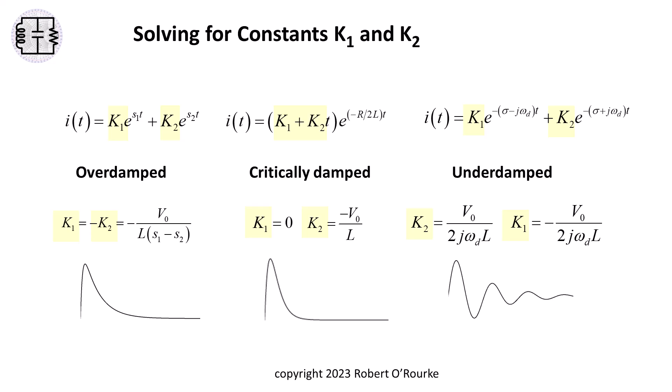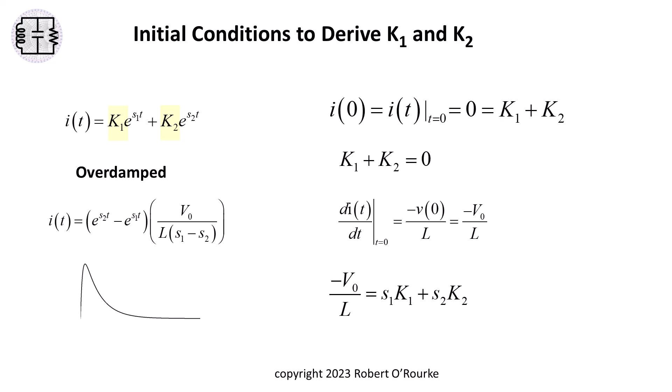The final step in the RLC differential equation solution process is to solve for the values of the constants k1 and k2 for each of the different damping cases. Calculating the constants k1 and k2 utilizes initial conditions.